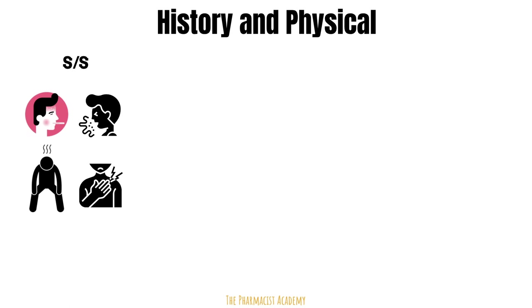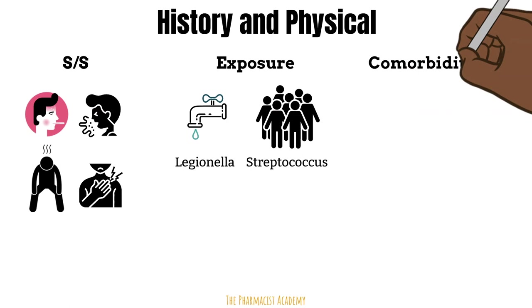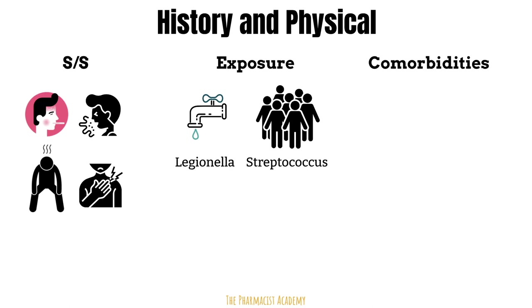We also want to know if the patient has been in any situations recently where we see common bacteria. For example, legionella can thrive in contaminated air conditioning and water systems, and streptococcus can be found in crowded places like jails and shelters. You also want to learn of the patient's other comorbidities, such as COPD, heart diseases, stroke, and diabetes. These comorbidities can increase the patient's risk of developing pneumonia, and depending on the comorbidities, some pathogens may be more common.